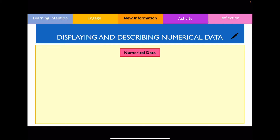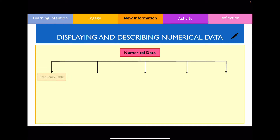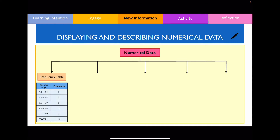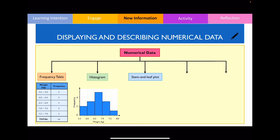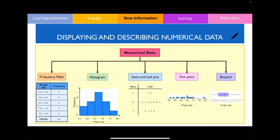Please recall that numerical data involves collecting numbers, and we can collate and display these data in a number of meaningful ways. One way is by using a frequency table, another is by constructing a histogram. Other forms of graphs also include a stem and leaf plot, a dot plot, and a box plot. But in today's lesson we're only going to be concentrating on frequency tables and histograms.